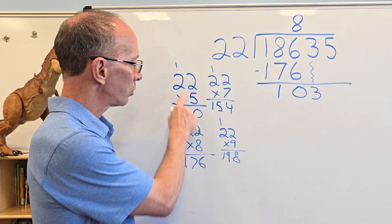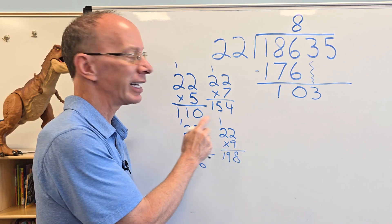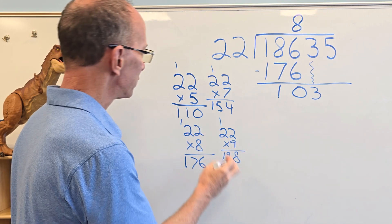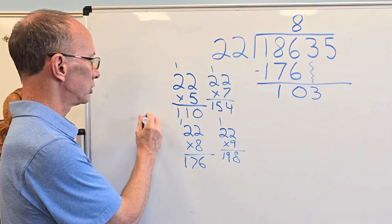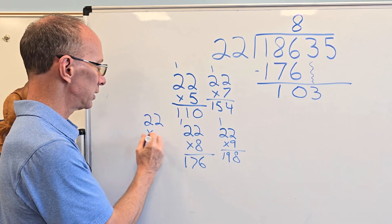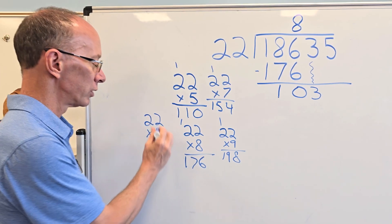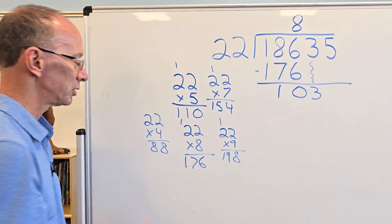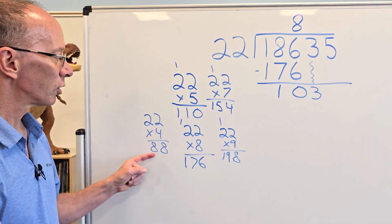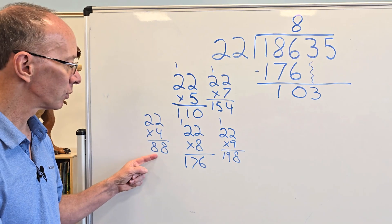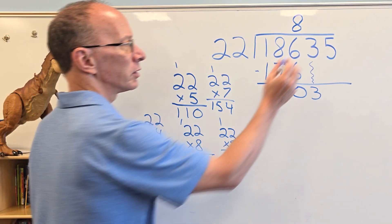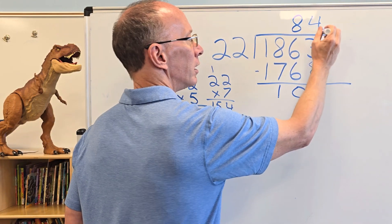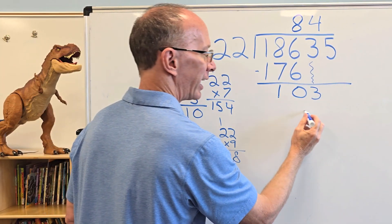I have 22 times 5 is 110, and that is too big. So let's try over here, 22 times 4. So 4 times 2 is 8, and 4 times 2 is 8 again. So we're going to be using this one right here, 4. All right. So I put the 4 right above the 3, and 4 times 22 is 88.